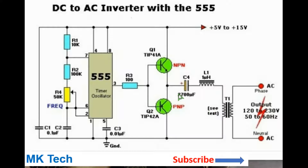To achieve more power, you can parallel more TIP41 transistors and TIP42 transistors to increase the current handling capacity. You can also increase the value of capacitor C4 to ensure more current can flow through.